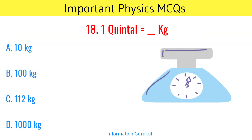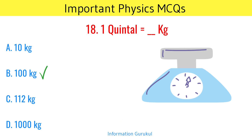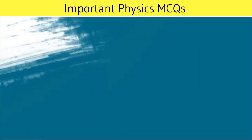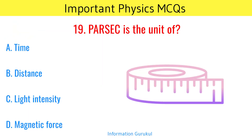1 quintal is equal to? 100 kilograms. Parsec is the unit of? Distance.